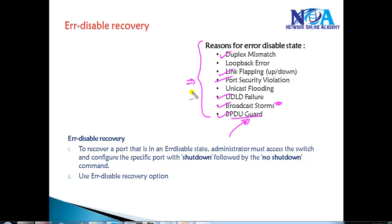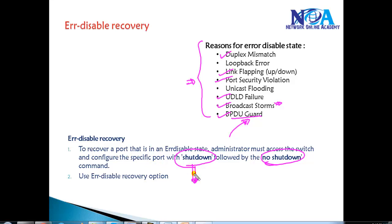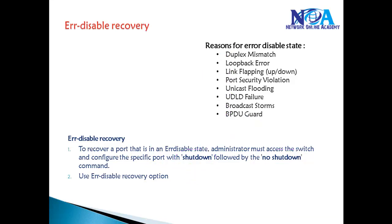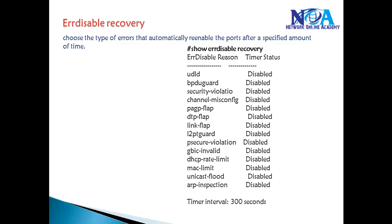There are plenty of reasons for putting a port into Error Disable State. One option, as mentioned, is to get back to the interface command line of the router or switch, give a shutdown command, and then a no shutdown to recover the port back into normal state. Alternatively, we can configure Error Disable Recovery for ports to come back automatically.